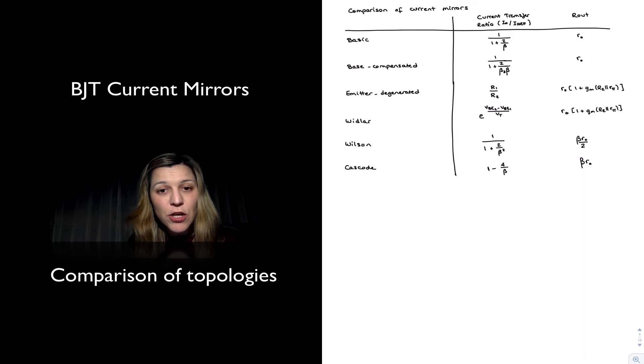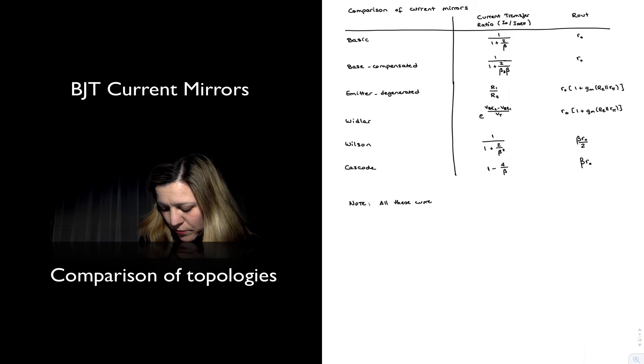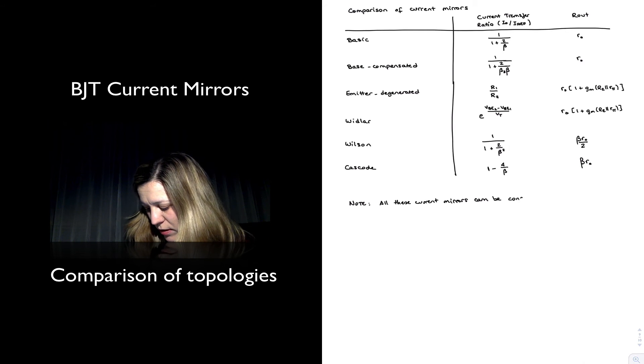As a final note, I also wanted to perhaps mention that all of the current sources that we have studied so far, we have studied using NPN transistors, but there is a PNP equivalent for all those current sources. So basically, a little design note here. All these current mirrors can be constructed or designed using NPNs or PNPs.